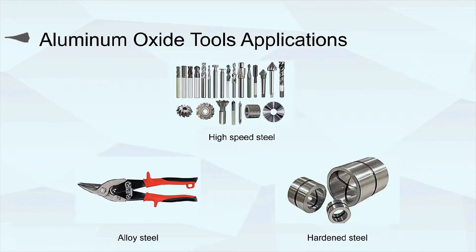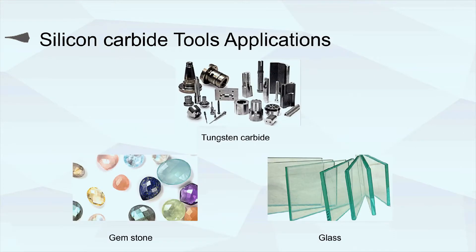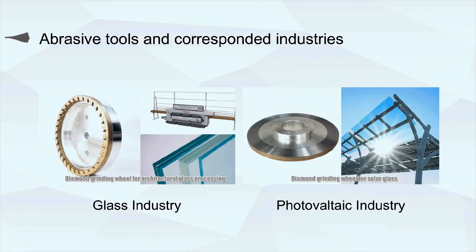Aluminum oxide abrasive tools are used for alloy steel, high-speed steel, hardened steel, etc. Silicon carbide abrasive tools are used for tungsten carbide, gemstone, and glass graining, cutting, or superfine graining.